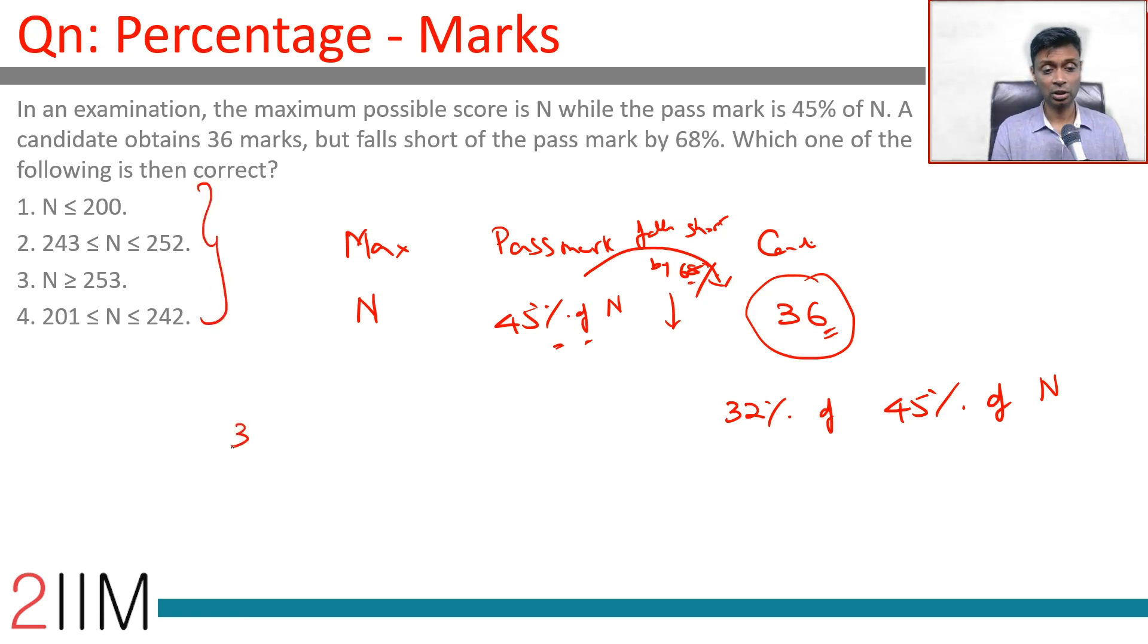So, let us find N. 32 by 100 into 45 by 100 into N is 36.